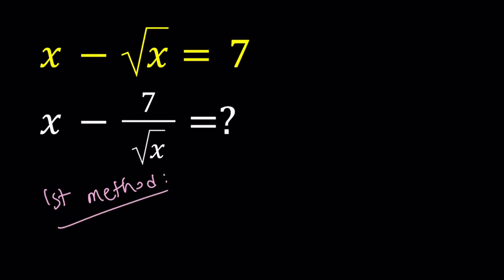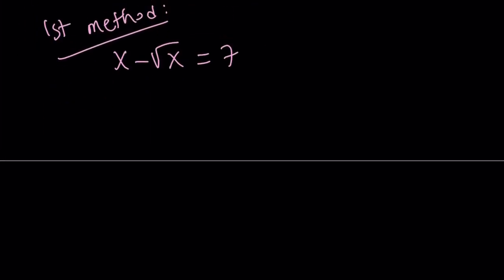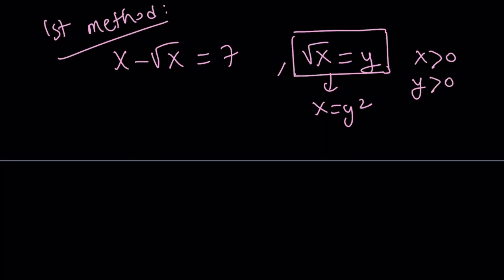So for my first method, I'm going to be using substitution, and I'll be dealing with this equation. Let's rewrite it: x minus square root of x is equal to 7. Now, to solve this equation for x, I'm going to use square root of x. I'm going to set it equal to y. This is going to be the substitution I use, and that implies x equals y squared.